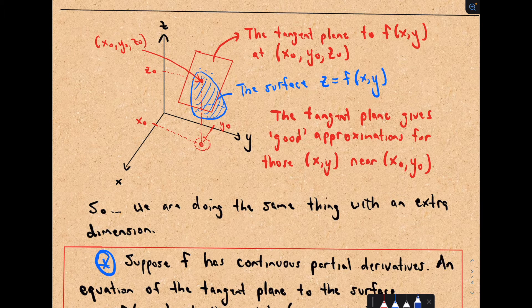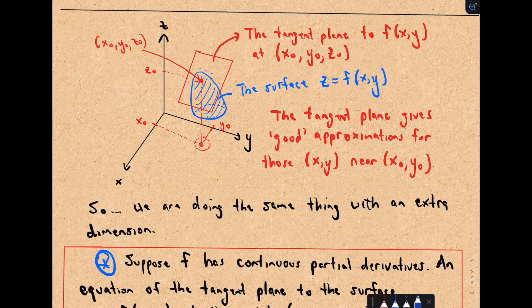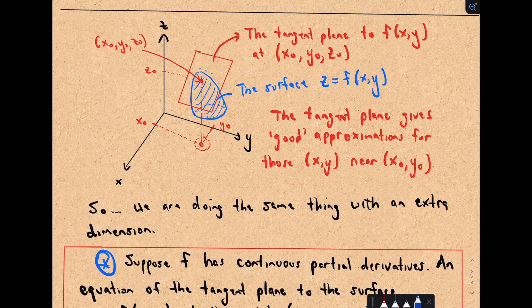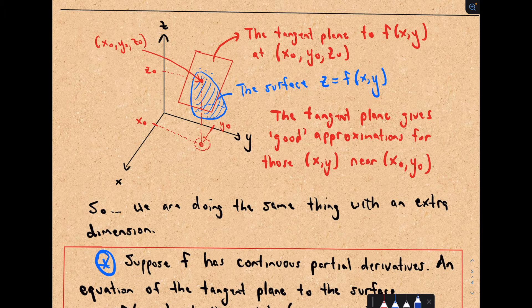You can kind of imagine, like, if you put like a sheet of paper and it's just sitting on top of that surface. And of course, it does matter the way that the paper fits on it for it to be the correct tangent plane. But that's the idea.